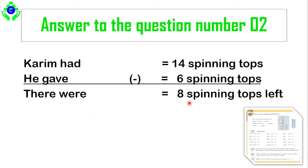How do we find 8? By counting with your fingers: 14 minus 6 equals 8. To check if your answer is right, if we add 8 with 6 the answer should be the first number. So 8 plus 6 equals 14, which matches the first line. That confirms 14 minus 6 equals 8, and 8 plus 6 also equals 14.